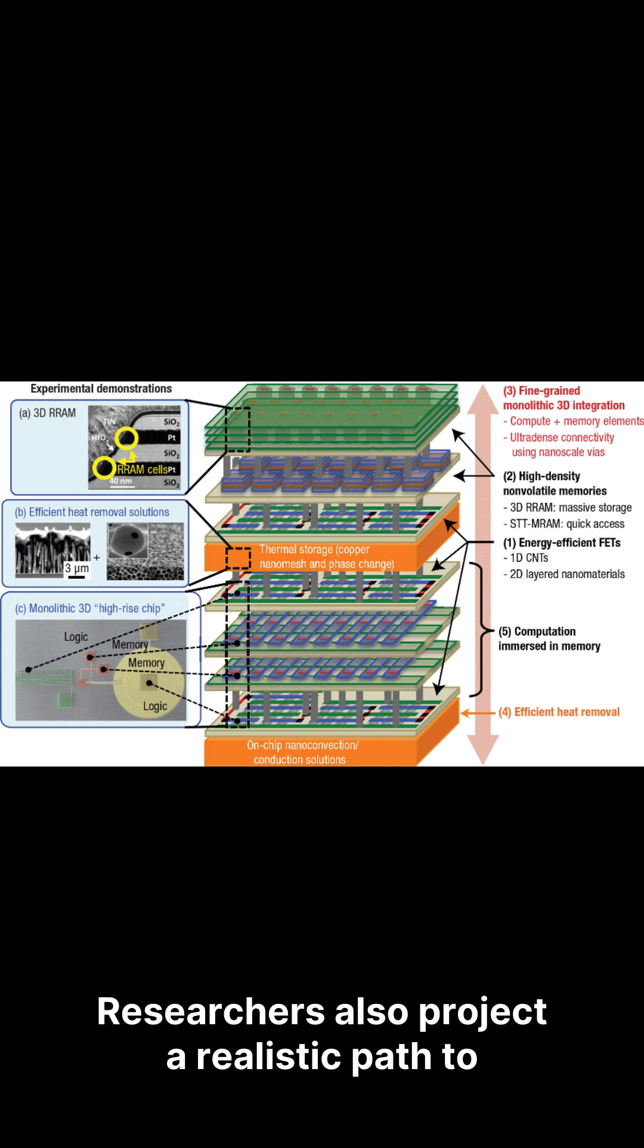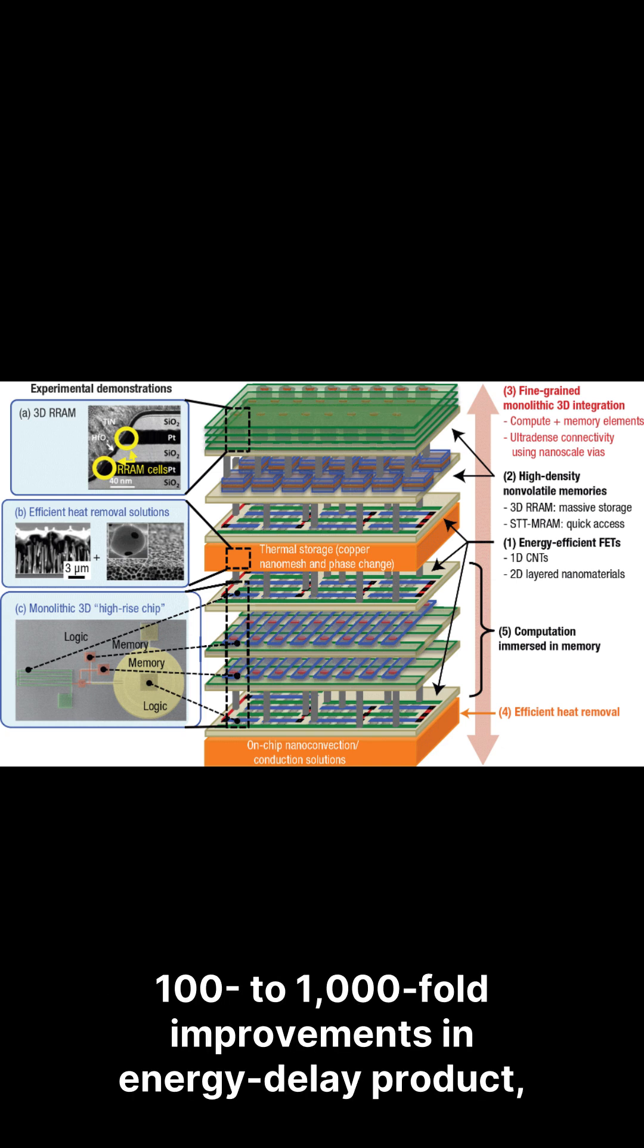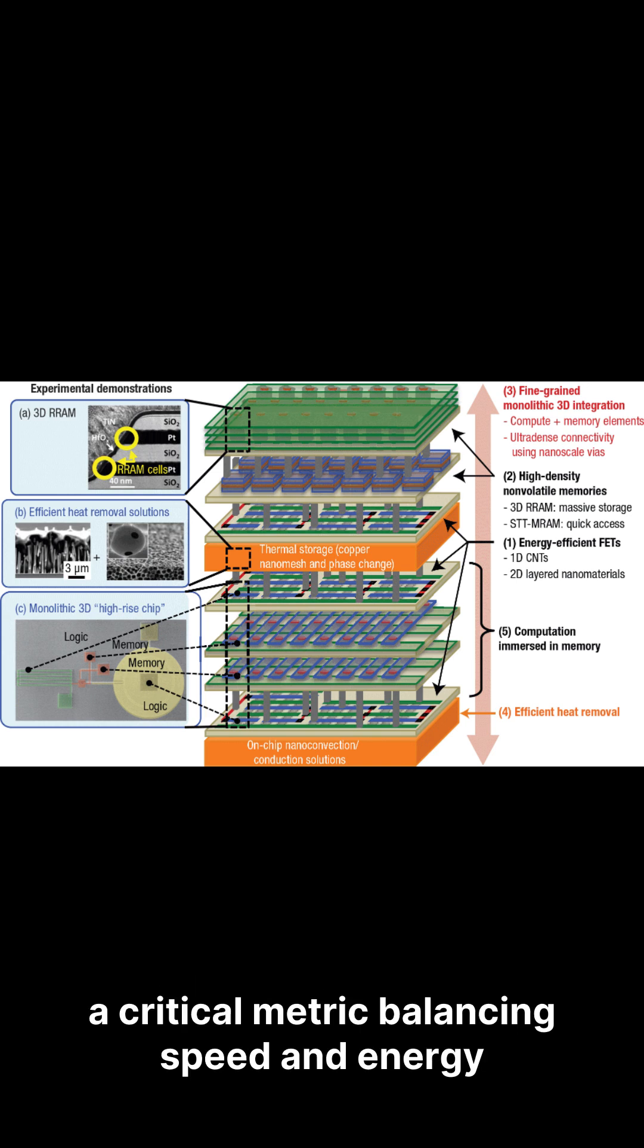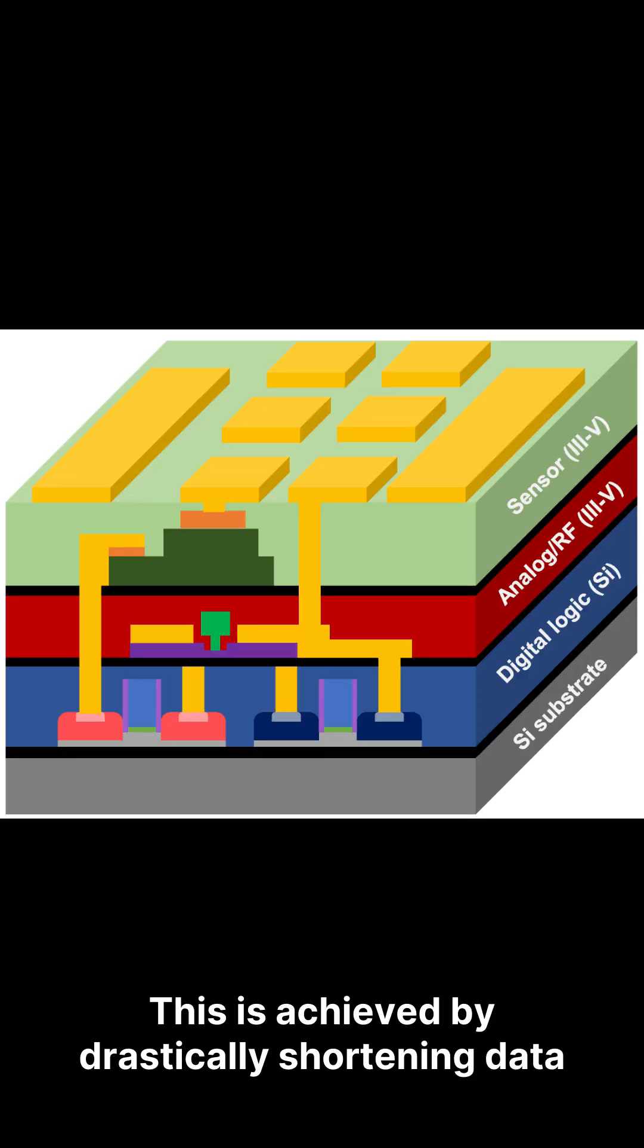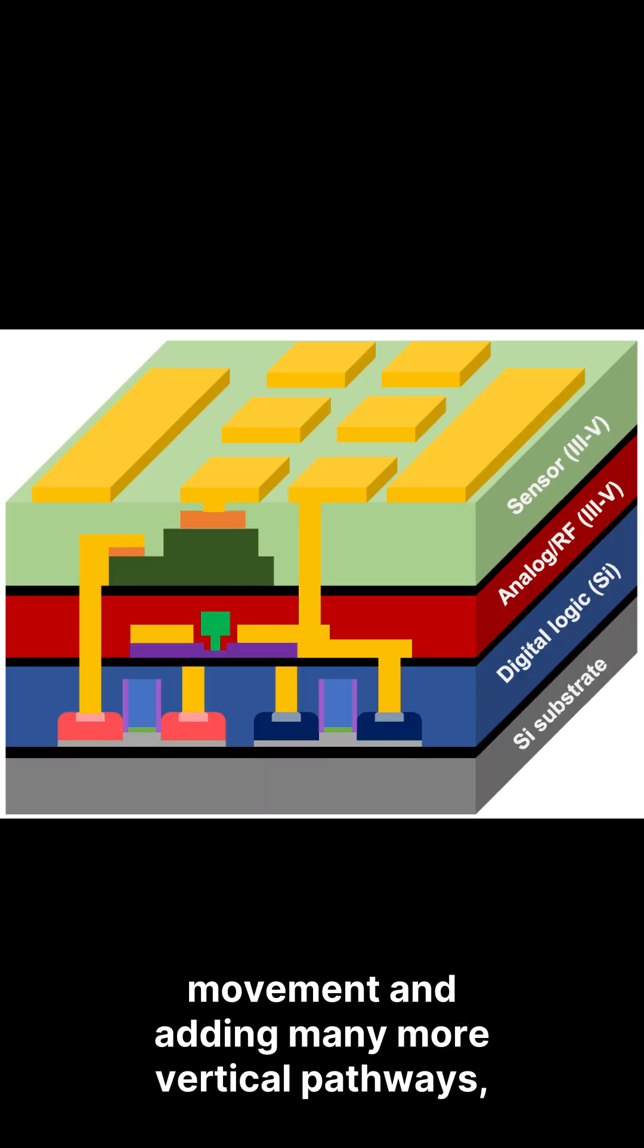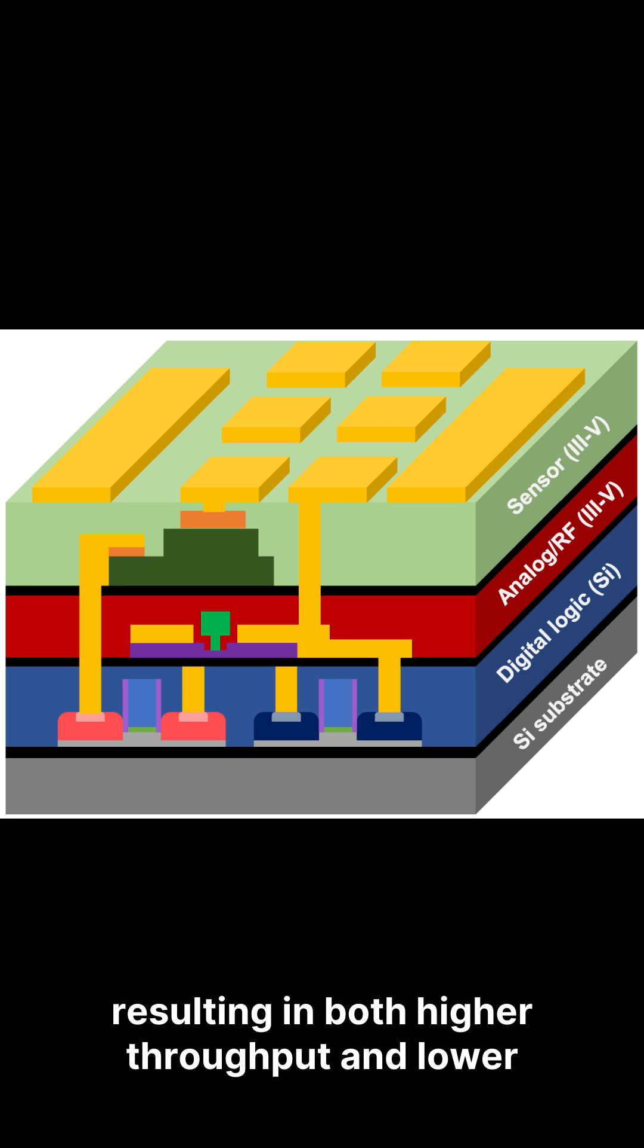Researchers also project a realistic path to 100 to 1000-fold improvements in energy delay product, a critical metric balancing speed and energy efficiency. This is achieved by drastically shortening data movement and adding many more vertical pathways, resulting in both higher throughput and lower energy consumption per operation.